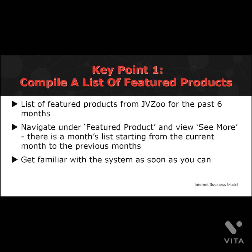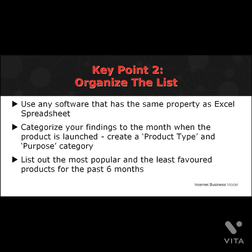You are directed to a page where you can view the top picks for the past months. On the right side of the page you can view 'See More,' where there is a months list. Click on the month and it brings you to the featured products of the selected month. Next, organize the list using an Excel spreadsheet, categorizing your findings by month and then by product type: Software Program, web-based app, graphics, or a hybrid product.